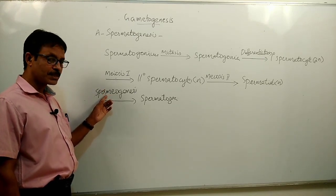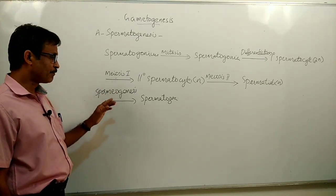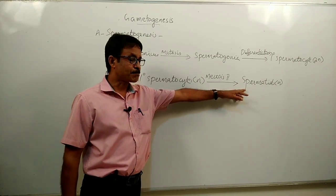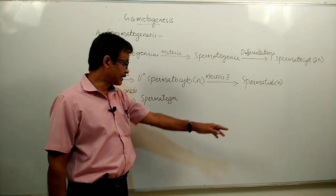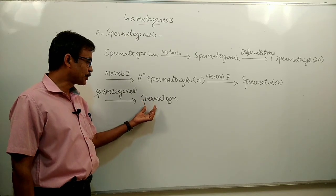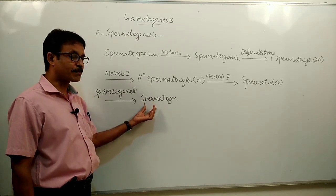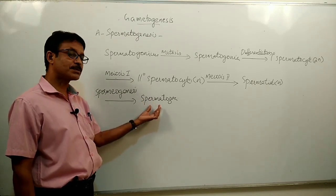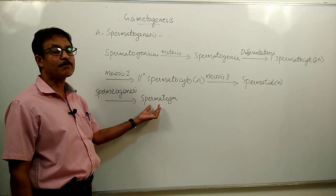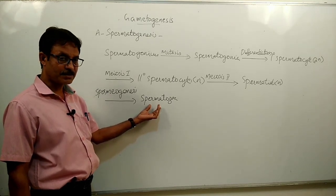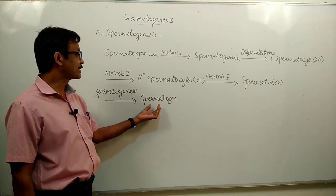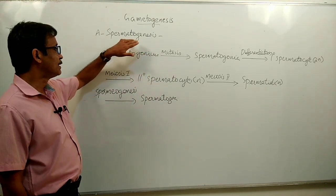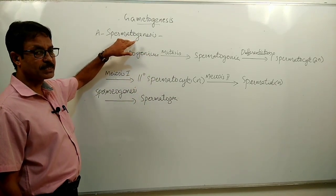Spermiogenesis is the transformation of spermatids into active spermatozoa or sperms with the help of certain conditions.